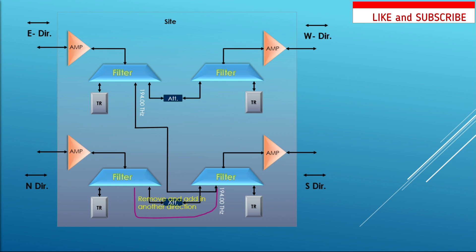Similarly, if the customer wants to change the wavelength — say from 194 THz to 193 THz — we need to change the filter port as well. All this work involves site visit costs, manual work each time, and is time-consuming. There are also chances of mistakes while removing the patch cord and connecting to another direction. To overcome all this, we need reconfigurable support where we can remotely change the direction or wavelength — that is why we move to ROADM.